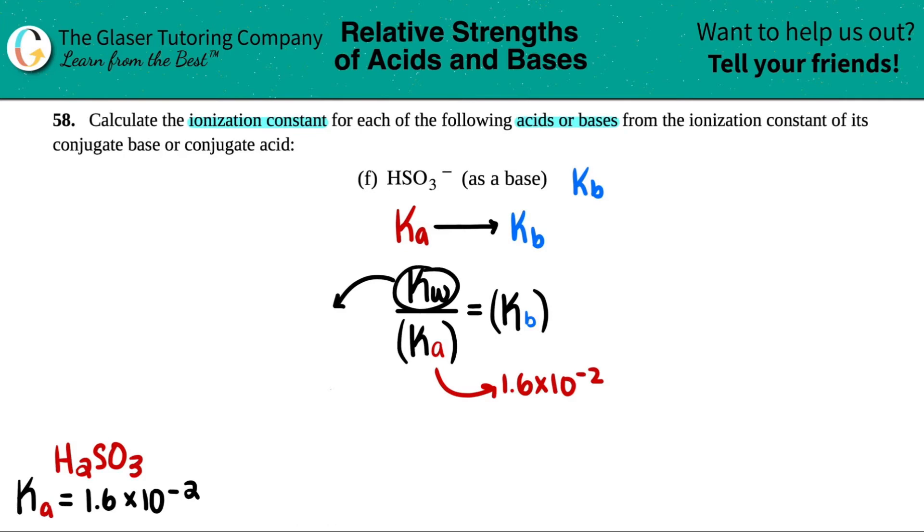the KW should be memorized. Chances are your teacher or professor won't give you that number. KW ionization of water is 1.0 times 10 to the negative 14th, or just 1 times 10 to the negative 14th, or just 10 to the negative 14th. Doesn't matter to me.